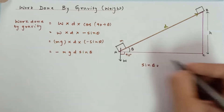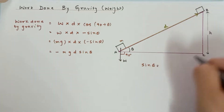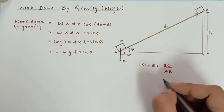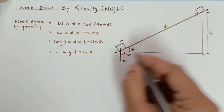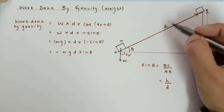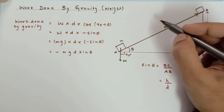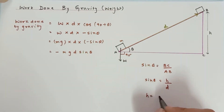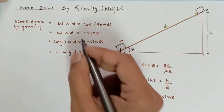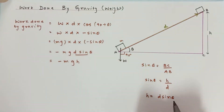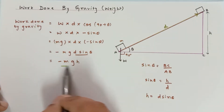From this triangle, sin theta equals the perpendicular BC divided by the hypotenuse AB. Here BC equals h and AB equals the displacement d, which is the length of the inclined plane. So sin theta = h/d, which means h = d sin theta. Substituting this value, the work done by gravity becomes −mg × (d sinθ) = −mgh. This is the formula for work done by gravity.